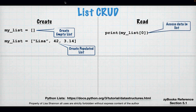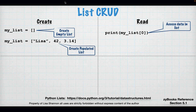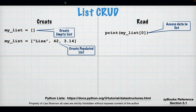Read means getting data out of a list. Every single letter in a string has a related index value, and strings are a special kind of list. Everything in a list has an index number starting at zero, going to one minus the length. To access it, use the variable name, open a square bracket, put in the index of the element you want, and close the bracket.